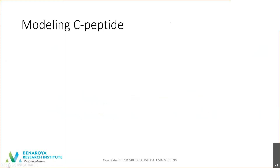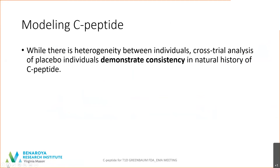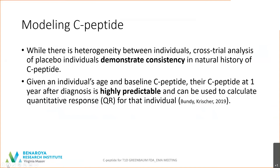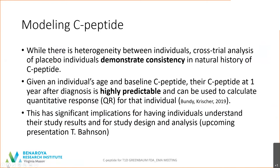What does that mean in terms of modeling C-peptide? While there's heterogeneity between individuals, cross-trial analysis of placebo individuals demonstrates dramatic consistency in the natural history of C-peptide. It's so strong that given an individual's age and baseline C-peptide, their value at one year is highly predictable, and it can be used to calculate a quantitative response or QR score for that individual, as published by Bundy and Krischer in 2019. This has significant implications for having individuals understand their study results, and for subsequent study design and analysis.